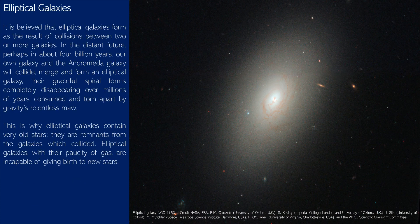It is believed that elliptical galaxies form as the result of collisions between two or more galaxies. In the distant future — perhaps in about four billion years — our own galaxy and the Andromeda galaxy will collide, merge, and form an elliptical galaxy, their graceful spiral forms disappearing over millions of years, consumed and torn apart by gravity. This is why elliptical galaxies contain very old stars: they are remnants from the galaxies which collided.